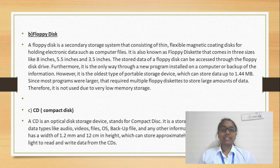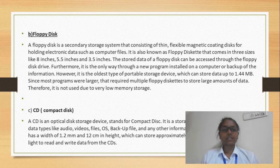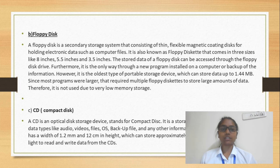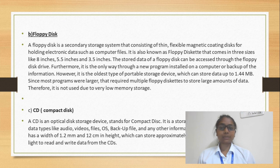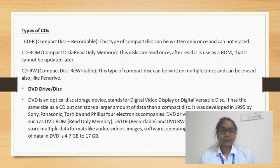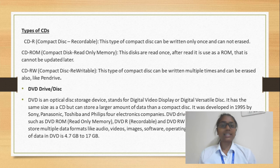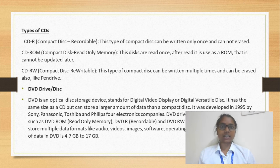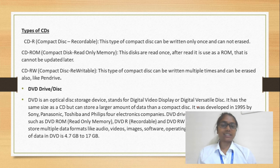Next is CD, which stands for Compact Disc. A Compact Disc is an optical disc storage device. It is a circular disc made from thin layers of metal, with a reflecting surface made from aluminum. It uses laser beam technology to read and write data. The storage capacity is approximately 783 MB. The CD has three types: CD-R, CD-ROM, and CD-RW. CD-ROM stands for Compact Disc Read Only Memory — it is pre-programmed, like movies or software CDs bought from the market, and we cannot erase or modify them.